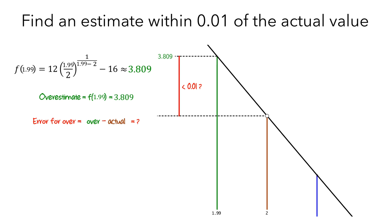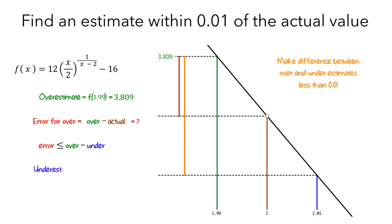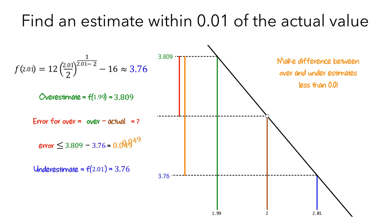So how do we guarantee an estimate that is within 0.01 of the actual value? Well, if we find an underestimate of the height of the hole, then the difference between the over and the underestimate is shown by the length of this orange line segment. The length of the orange line segment is at least as large as the length of the red segment — meaning the error for the overestimate is less than or equal to the difference between the overestimate and the underestimate. For our underestimate, let's use f evaluated at 2.01, which is 3.76. So the error is less than or equal to the difference between 3.809 and 3.76, which equals 0.049. But this difference is greater than 0.01, so we are not guaranteed that any of our approximations is within 0.01 of the actual height of the hole.